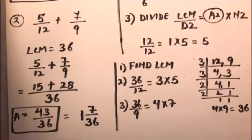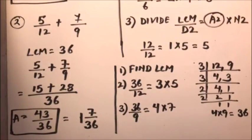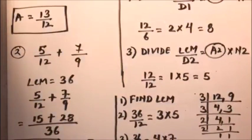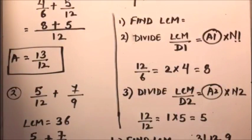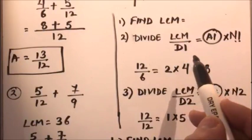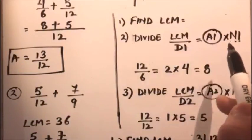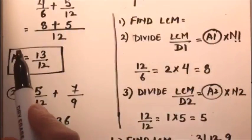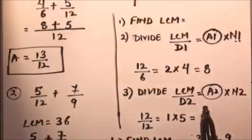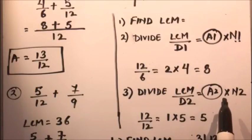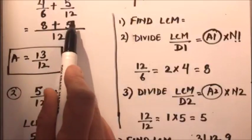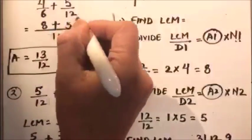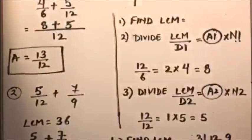In this way we can add two fractions with different denominators. The steps are: first, find the LCM of the two denominators — that is the common denominator. Then divide the LCM by the first denominator and multiply the result by the first numerator. Repeat the same process with the second denominator and second numerator. Then add the two results to get the final answer.